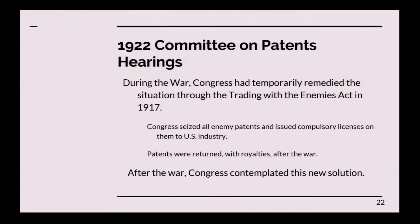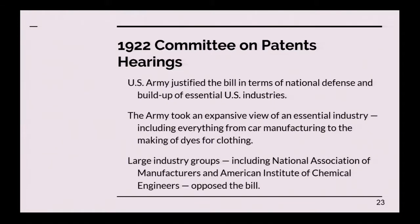Following the war, Congress also contemplated the new situation. The Army justified the bill in terms of national defense and the buildup of essential U.S. industries, taking a very broad view covering everything from car manufacturing to the dye used for soldiers' uniforms. A lot of large industry groups opposed the compulsory licensing bill because they feared it would be used against U.S. industries and not just foreign industries, which was the stated intention of the bill.